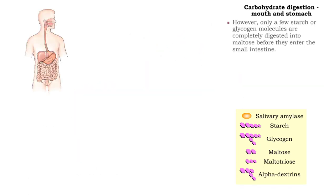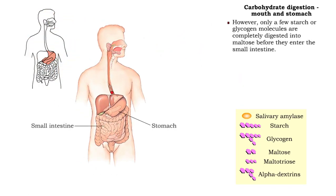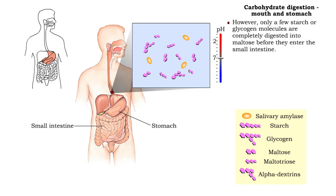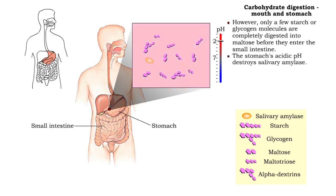However, only a few starch or glycogen molecules are completely digested before they enter the small intestine. This is because the acidic pH of the stomach destroys salivary amylase, and the enzymatic content of saliva is low.